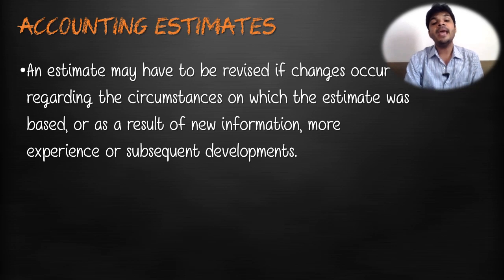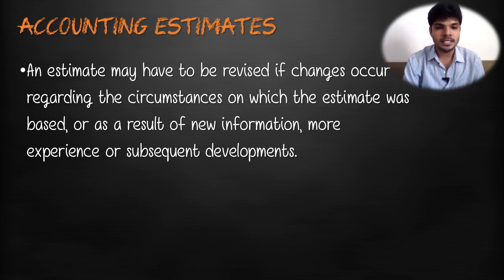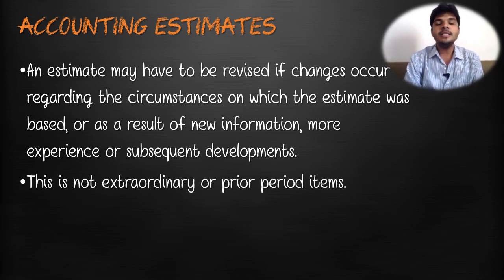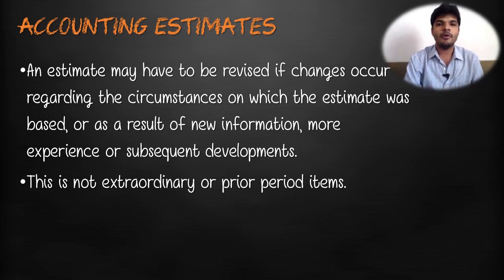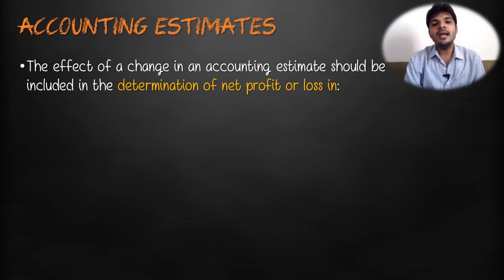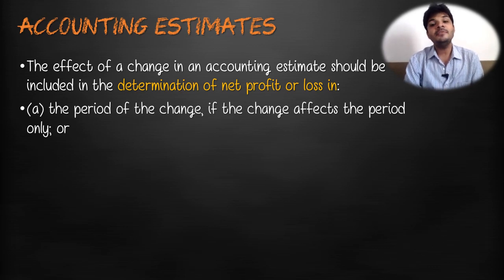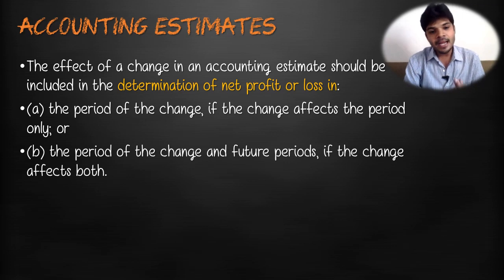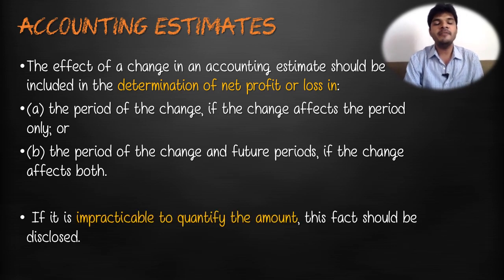An accounting estimate may have to be revised if changes occur regarding the circumstances on which the estimate was based, or as a result of new information, more experience, or subsequent developments. This is not an extraordinary or prior period item — it is a change in accounting estimate, which is completely different. The effect of a change in an accounting estimate should be included in net profit or loss in the period of change if it affects only that period, and also in future periods if the change affects both. If it is impracticable to quantify the amount, that fact should be disclosed.